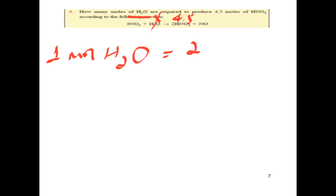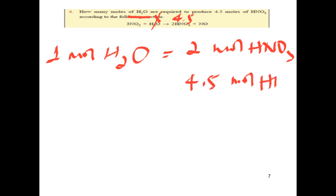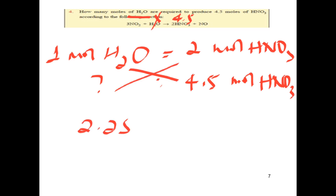How many moles of water are required to produce 4.5 moles of nitric acid according to the following equation? 4.5 moles of nitric acid. From the balanced chemical equation, 1 mole of water produces 2 moles of nitric acid. If you produce 4.5 moles of nitric acid, then 2.25 moles of water are required.